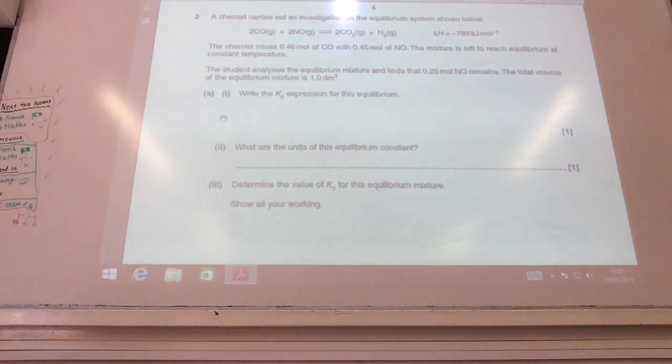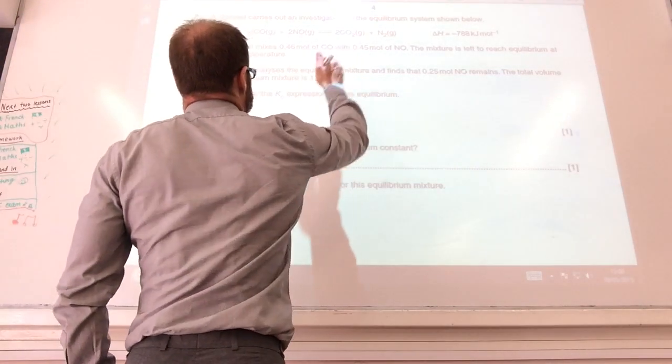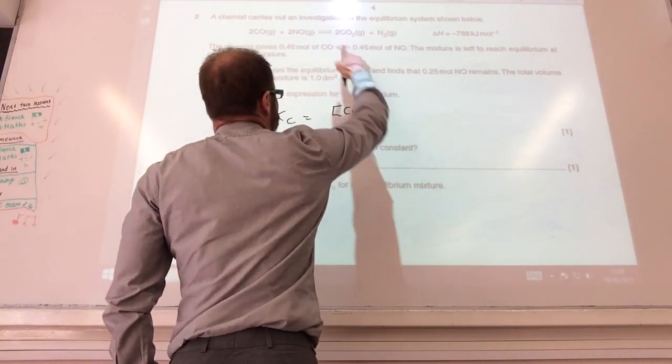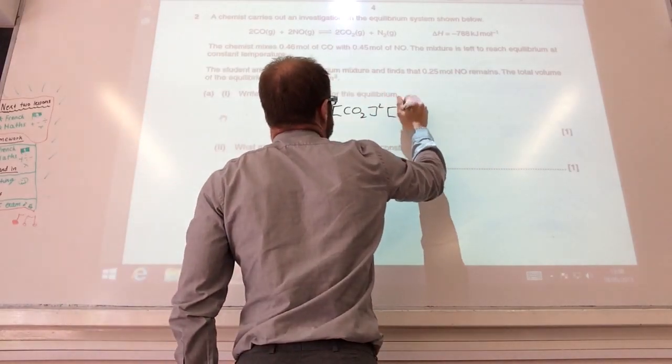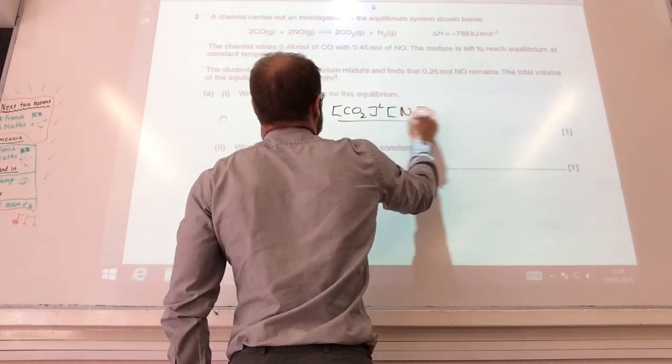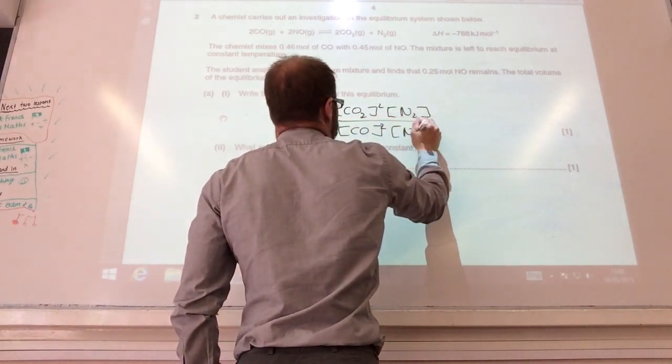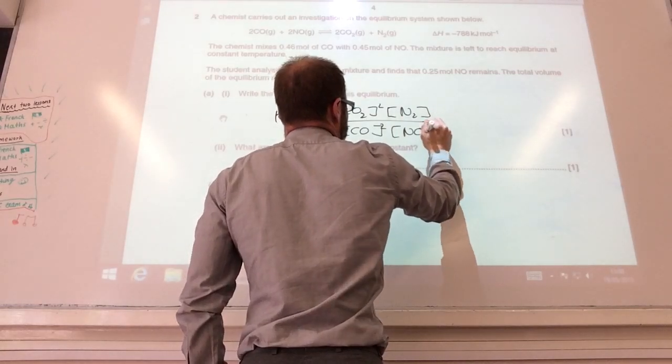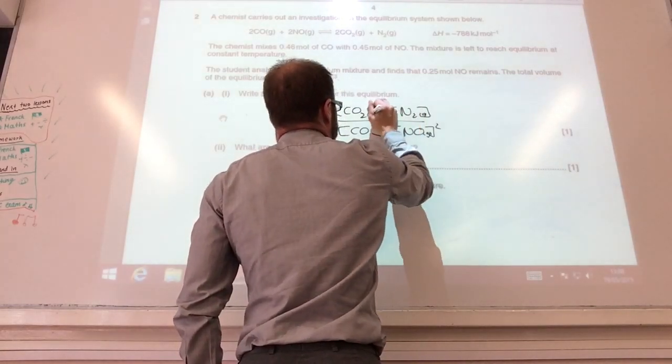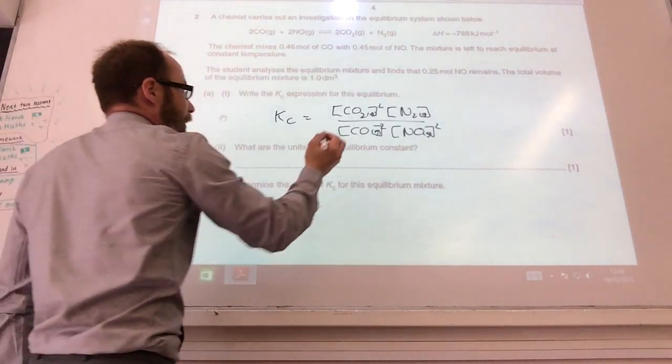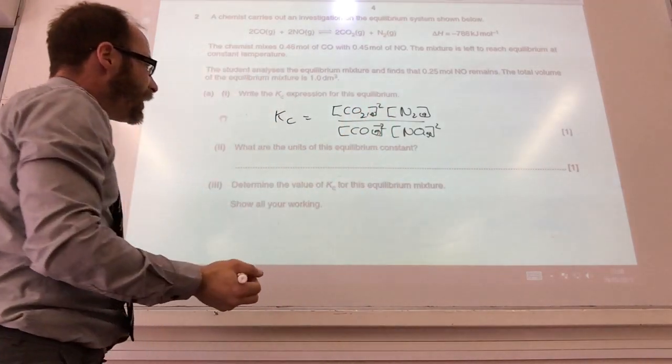Right, so we're kicking off with some equilibrium now. We've moved on to question two. Kc for this expression, well should be quite straightforward. Don't forget your square brackets. That is going to be [N2]^2 over [CO]^2 [NO]^2. Probably should put those states in as well just to keep them happy. What are the units going to be?